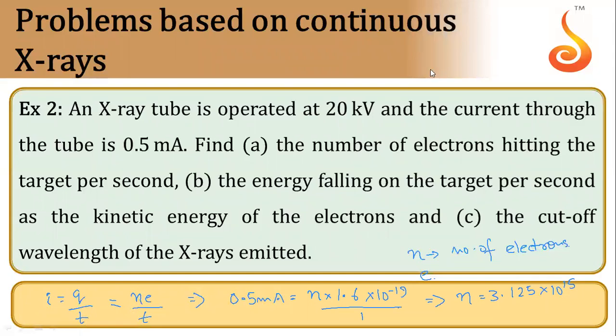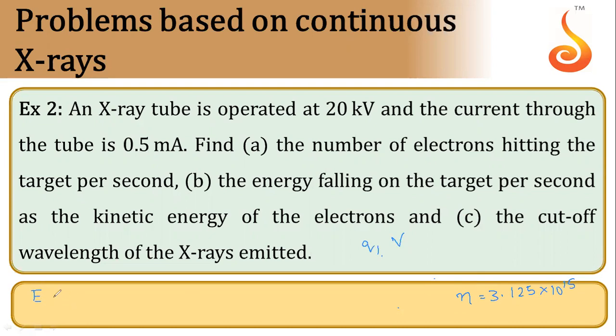Now let's move to the next question: the energy falling on the target per second. We know that whenever a charge is accelerated by a potential difference V, if charge is q, energy gained by it is q into V.